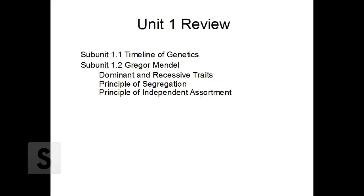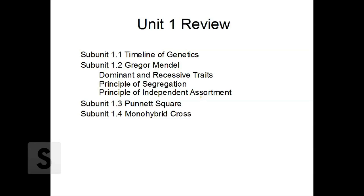We also examined the principle of independent assortment, which is important because it's one of the main ways we have genetic variation in our offspring. We also covered the Punnett square, invented by Reginald Punnett, which is meant to be a teaching tool for Mendel's principles. We examined monohybrid crosses, which are crosses between two heterozygotes for one set of alleles. We also looked at dihybrid crosses — hybrid meaning heterozygous and di meaning two sets of alleles.